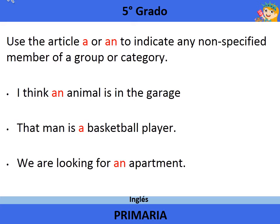Use the article A or AN to indicate any non-specific member of a group or category. For example: I saw an animal in the garage. That man is a basketball player. We are looking for an apartment.